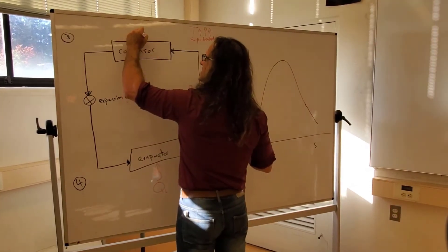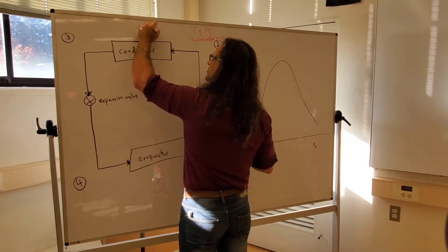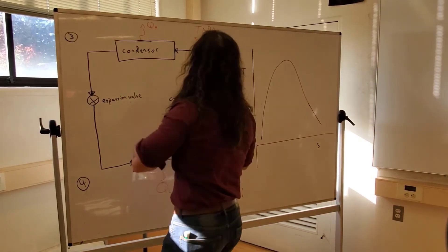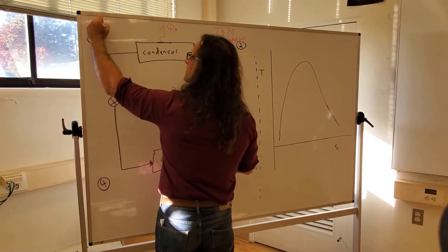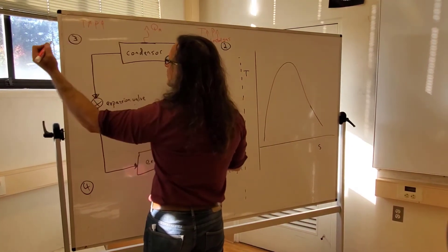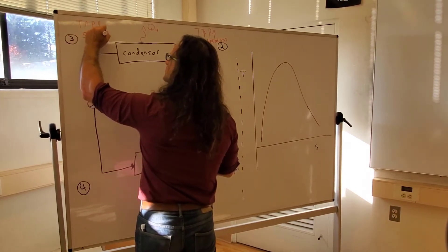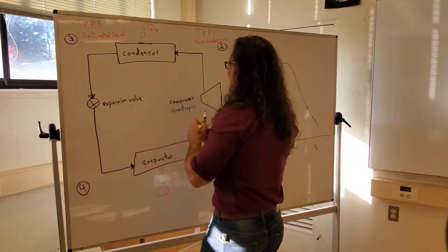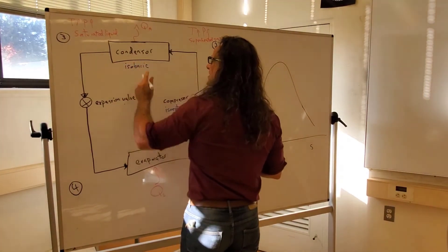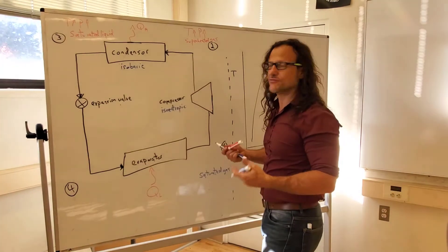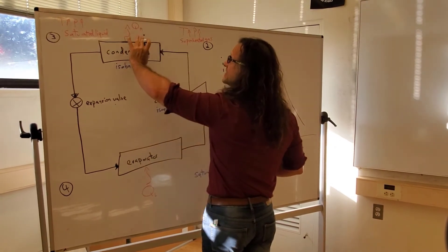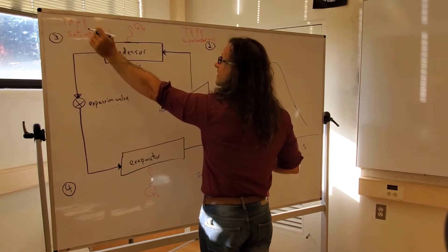Then the condenser dumps its heat to the environment — we can call that QH, QHigh, or QCondenser. It dumps that heat to the environment, and out of that it's dumping so much heat that we have a slightly lower temperature, equally as high pressure, but now it's coming out as a saturated liquid. This condenser is acting in an isobaric way. In a real refrigerator there's friction loss and it's not perfectly isobaric, but in this idealized version it's isobaric — same pressure coming out — giving us a high pressure saturated liquid.